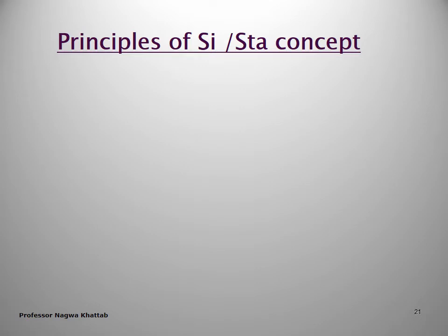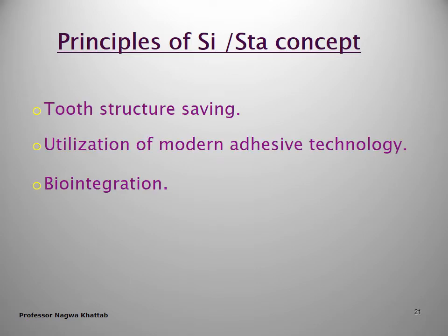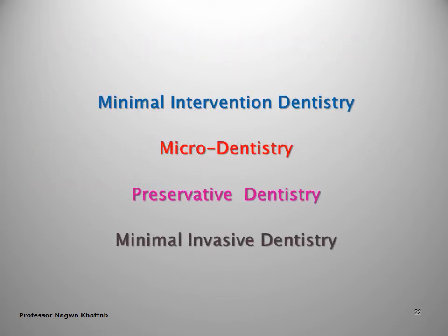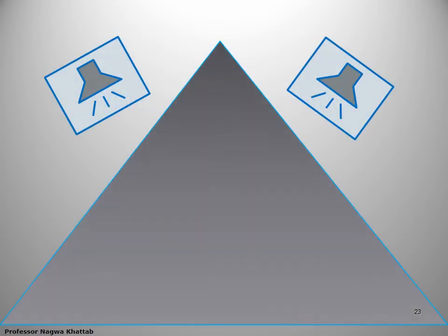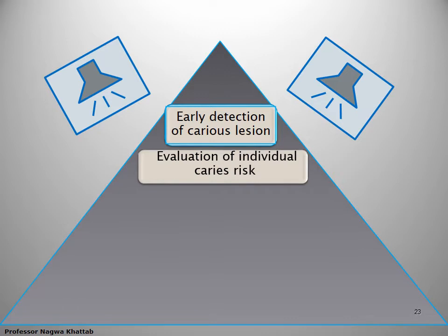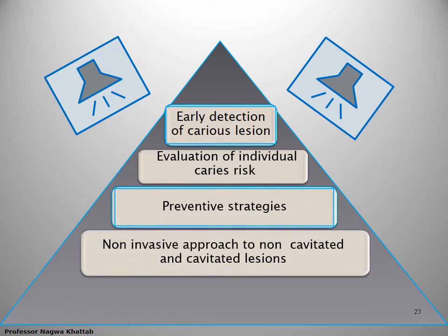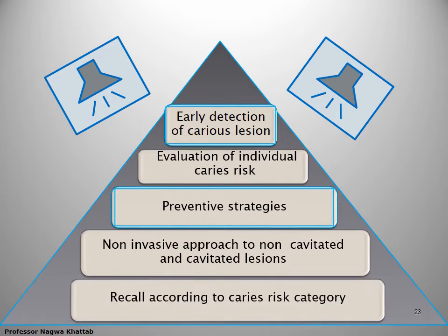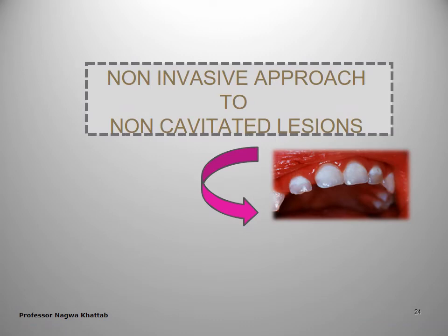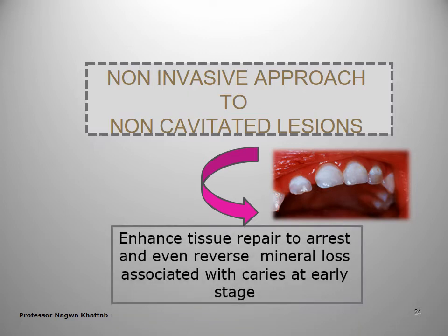The principles of the modern concept include early detection of the carious lesion, evaluation of the individual risk for caries, application of a preventive strategy, non-invasive approach to non-cavitated lesions, and recalls according to patient risk. The non-invasive approach for non-cavitated lesions, which is the main concern of the modern concept, aims to enhance tissue repair, and to arrest and even reverse minimal loss associated with early carious lesions.